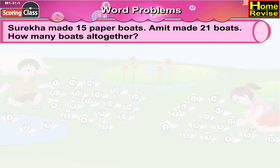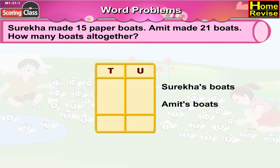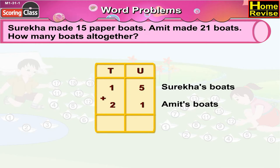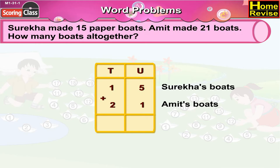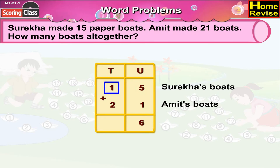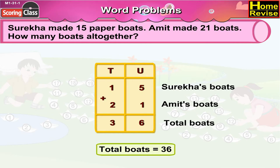Let us arrange them. Under units, you will write 5 and 1. Under tens, you will find 1 and 2. Now if we add them: 5 and 1 is 6, 1 and 2 is 3. So, total number of paper boats: 36.